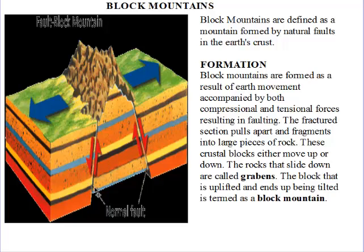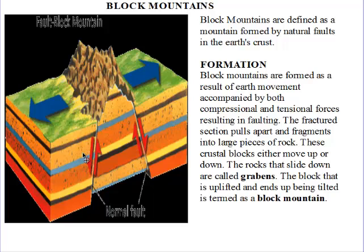So compressional and tensional forces lead to faulting within the earth's crust. Here is the location of the fault lines. The fractured portion either pulls up or the sides pull down. The rocks that pull down are known as grabens or a rift, and the one that rises or is uplifted is known as the block mountain.